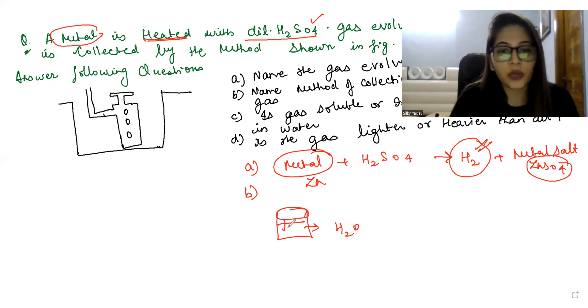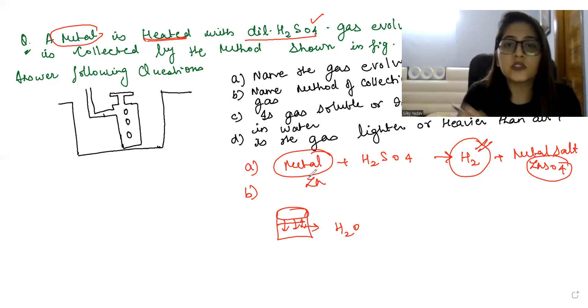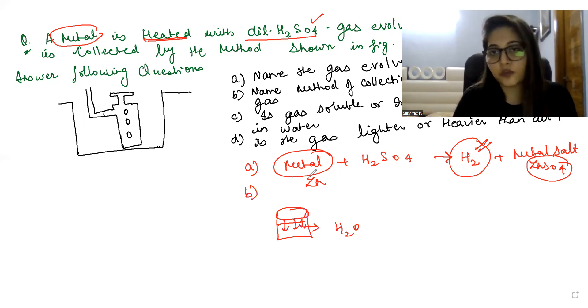If you're collecting the hydrogen gas, hydrogen gas will be collected here by the downward displacement of the other thing, that is water. So this is the name of the method of collection of gas - it will be collected by the downward displacement of water. Now I'll write it: downward displacement.